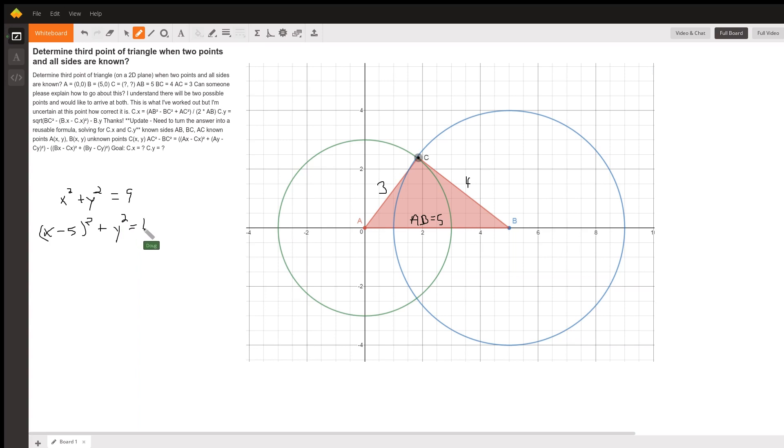So how do you solve that system? Well, probably the easiest thing to do is to solve this first equation for Y squared. Y squared equals 9 minus X squared.